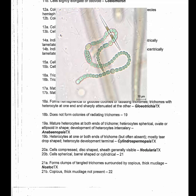We go to 21: forms clumps of tangled trichomes surrounded by copious thick mucilage. The answer is no, because we've got a straight filament here. Copious thick mucilage not present — yes. So we go to 22.